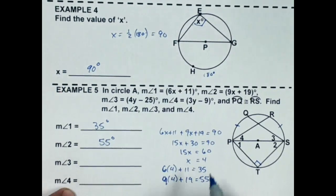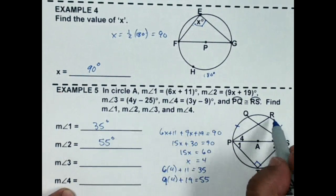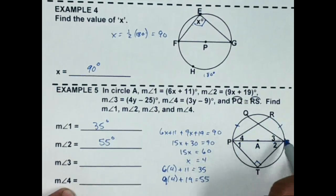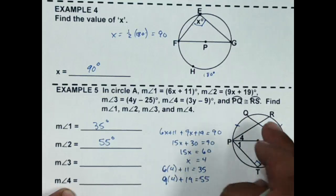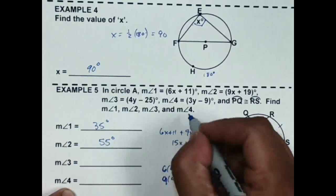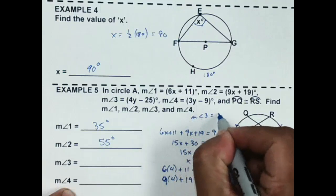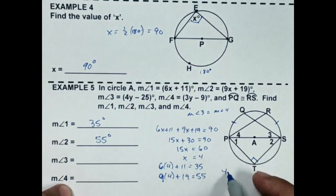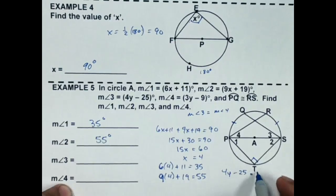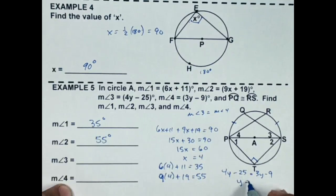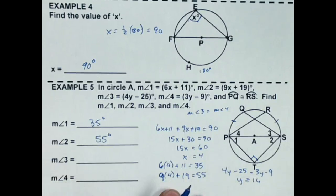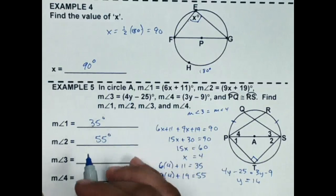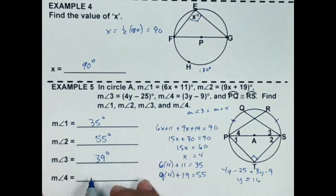Now for angles 3 and 4: since arc PQ is congruent to arc RS, angles 3 and 4 are congruent. So the measure of angle 3 equals the measure of angle 4. Setting 4Y − 25 equal to 3Y − 9 gives Y = 16. Substituting: 4(16) − 25 = 39 degrees. Both angle 3 and angle 4 are 39 degrees.